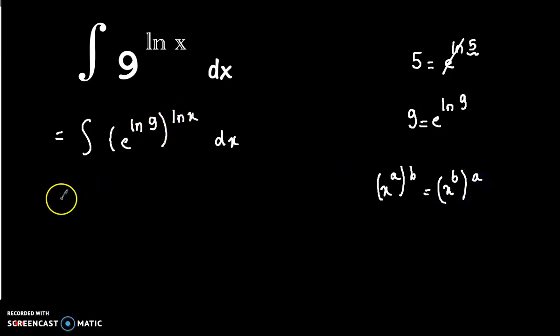In this case, we have the integral of e to the power ln x, all to the power ln 9, dx. Now e and ln cancel out, so we will have x to the power ln 9 dx.